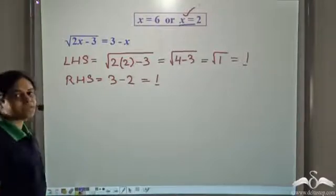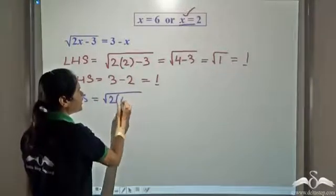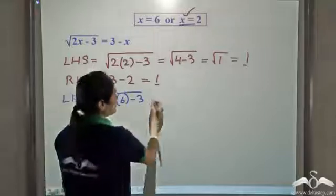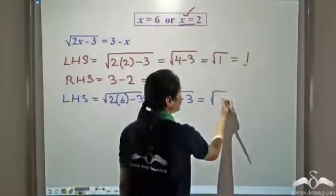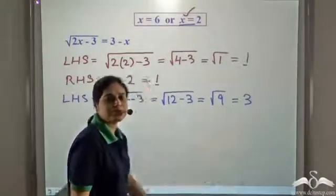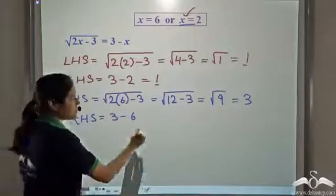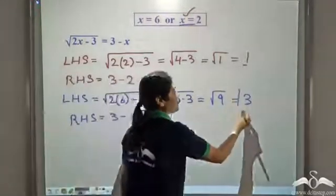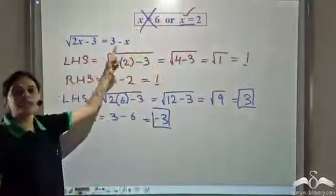Now let us check for x equal to 6. Left hand side is root over 2 into 6 minus 3. Two into 6 is 12, so we have root of 12 minus 3, which is root 9, which is 3. The positive square root of 9 is 3. But the right hand side is 3 minus x, that is 3 minus 6, which is equal to negative 3. These are not equal, hence x equals 6 is not a solution of this equation.